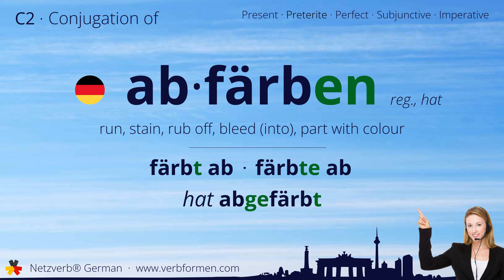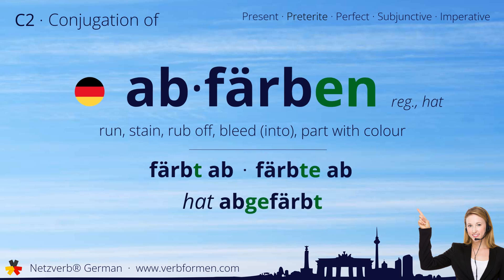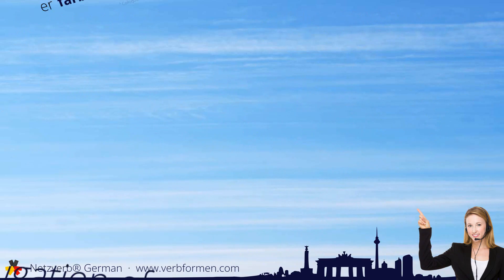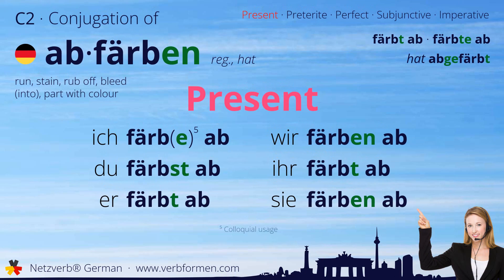Now let's move on to the tenses. First, we'll take a look at the present tense. Ich färbe ab. Du färbst ab. Er färbt ab. Wir färben ab. Ihr färbt ab. Sie färben ab.